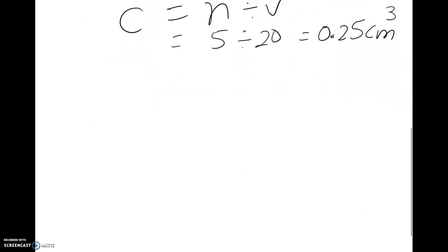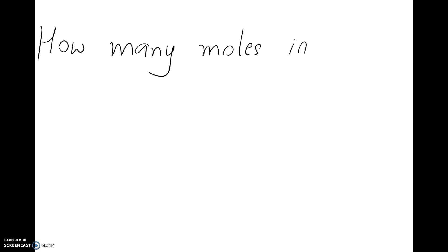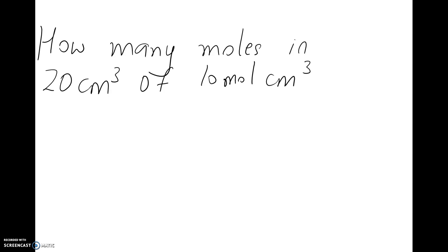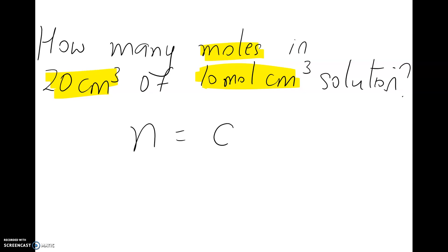Let's look at a slightly different example: How many moles are in 20 cm³ of a 10 mol/cm³ solution? This time I want to work out the number of moles; I've been given the volume and the concentration. Number of moles equals concentration times volume: 20 times 10. Since both values are in the same unit, no conversion is needed — the answer is 200 moles.